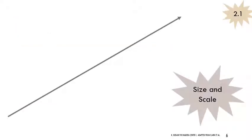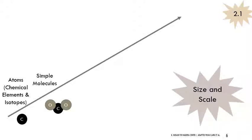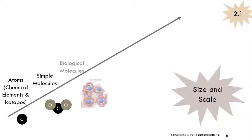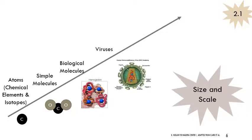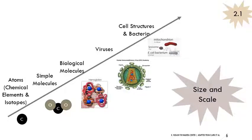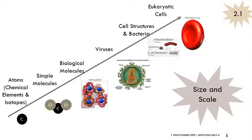This is a slide from last week thinking about size and scale and different levels of organization. Atoms — which include chemical elements and isotopes — are the smallest unit. Those come together to form simple molecules. In this example, we have carbon as an atom and carbon dioxide as the simple molecule. We have bigger biological molecules like different proteins, viruses assembled from biological molecules but not technically alive, cell structures and bacteria. By cell structures we mean organelles — things like mitochondria or lysosomes. Those organelles within our cells are roughly the same size as a bacterium. And then we have the much larger eukaryotic cells, like the red blood cell pictured here.